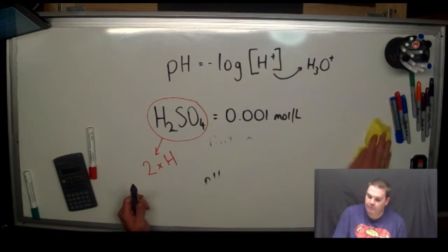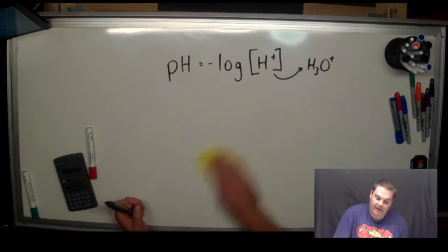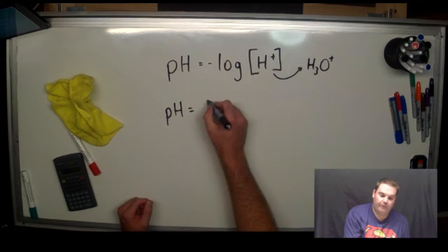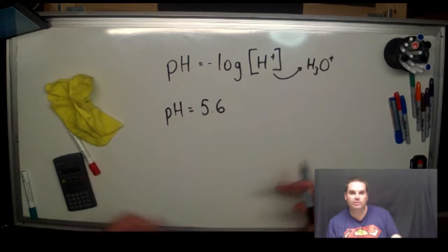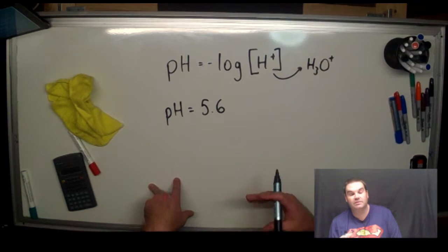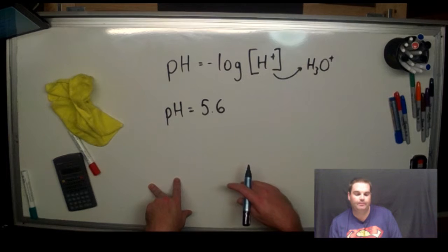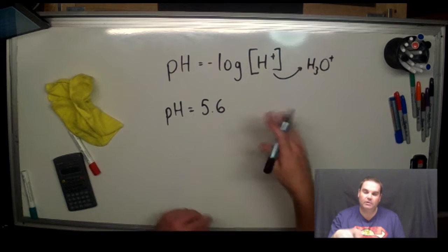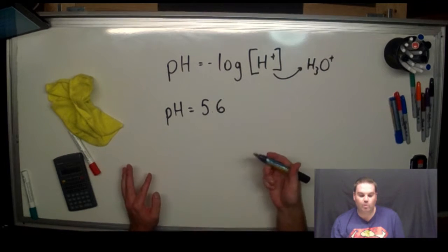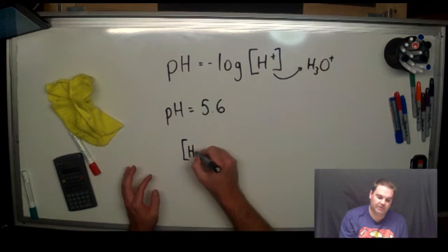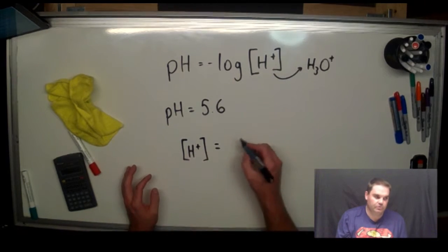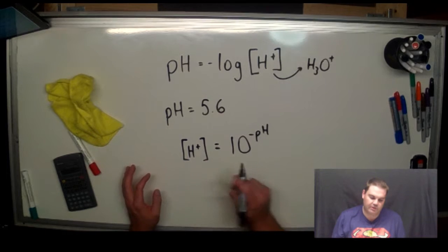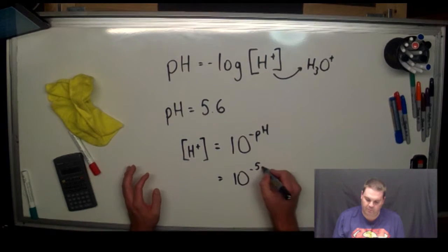Now, how do you go backwards? So if you've got a pH of 5.6, how do you go backwards to work out what concentration of H+ ions do you need in order to start making acid rain? Well, all you've got to do is rearrange this equation, and the opposite of negative log is 10 to the power of. So if you want to calculate your concentration of H+, you must do 10 to your negative pH.